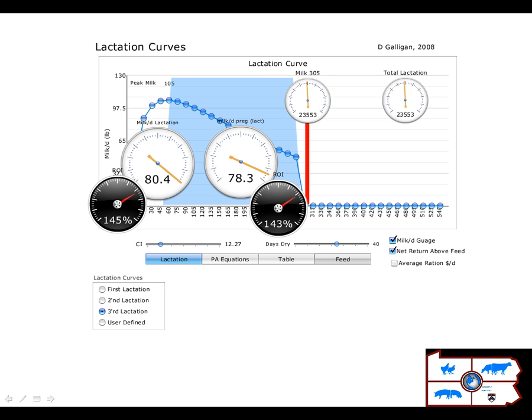But then as we move out in time where the calving interval gets more extended, notice how quickly the return on feed cost investment decreases much more dramatically, showing the effect of being out at this later stage of lactation when milk production is really low.